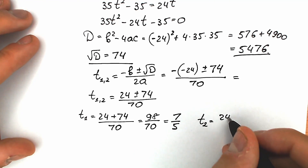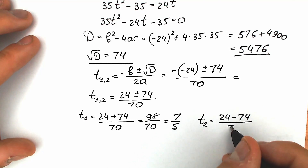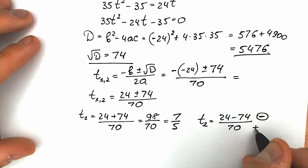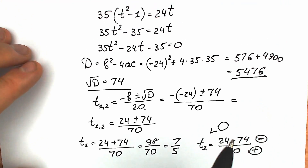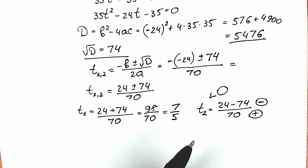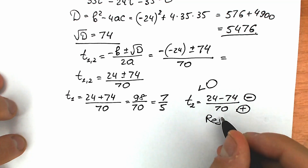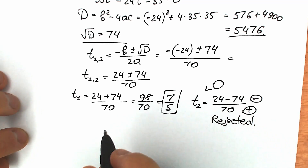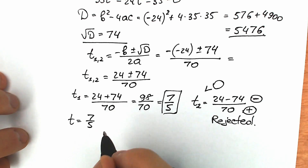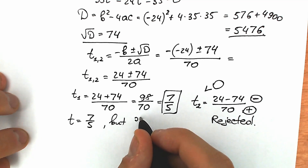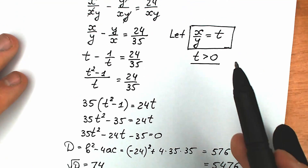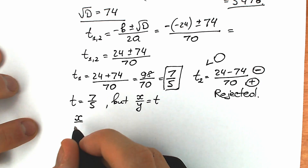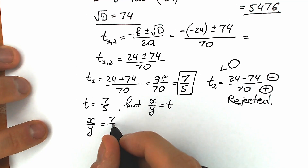For t₂ with the minus sign: t₂ equals (24 minus 74) over 70, which gives a negative numerator over a positive denominator — so t₂ is less than zero. Since we established t must be positive, we reject t₂. Therefore t equals 7 over 5, which means x over y equals 7 over 5.